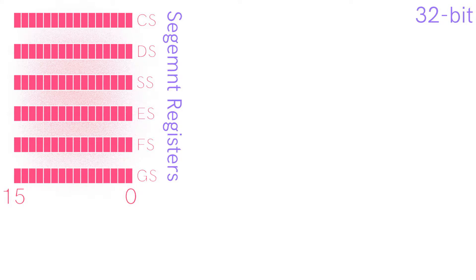In a flat memory model, all of these registers point to address 0x0, the start of memory.